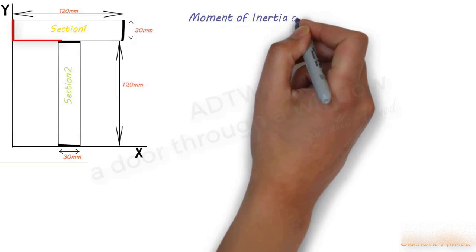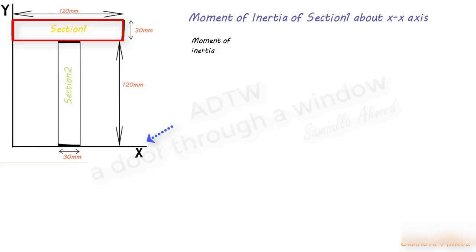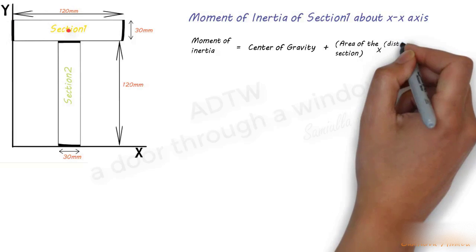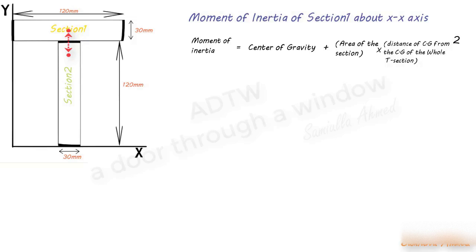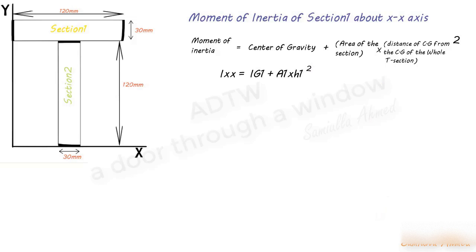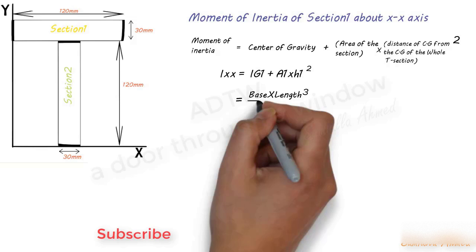Since we found all required values, we can now find the moment of inertia of Section 1 about the X-axis. The formula is: I_x1 = IG1 + A1 × h1², where IG1 is the centroidal moment of inertia of Section 1, A1 is the area, and h1 is the distance of the CG of Section 1 from the CG of the T-section. IG1 is given as (base × height³) / 12.